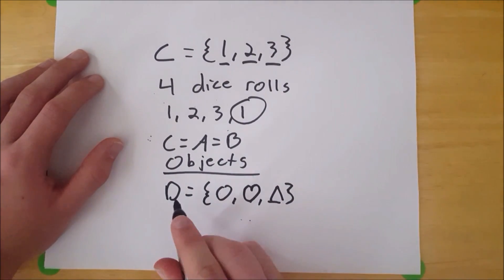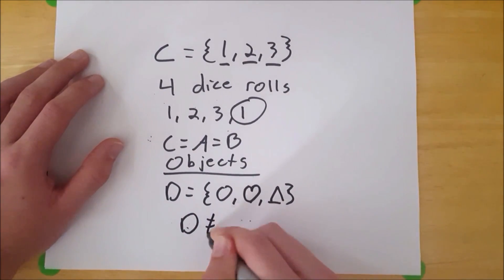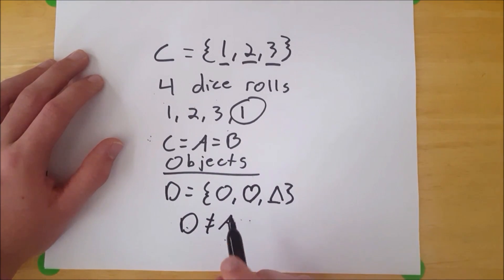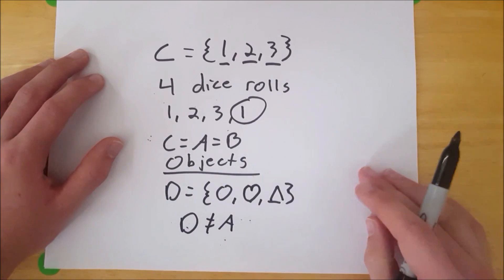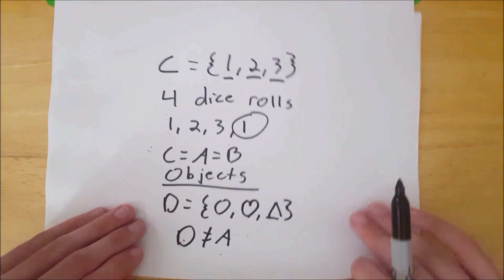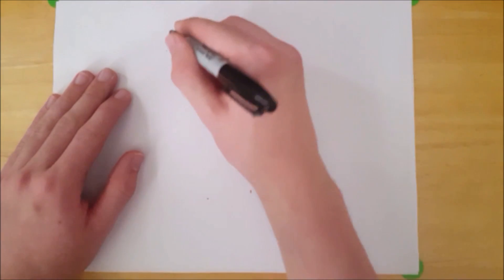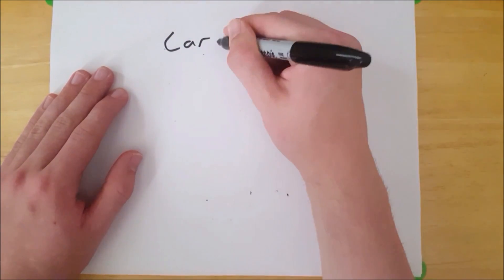Well, we know that set D is not equal to set A, because A has one, two, and three, and D has circle, heart, and triangle. So they don't have any elements in common. However, they do have one thing in common, and that thing is their cardinality.